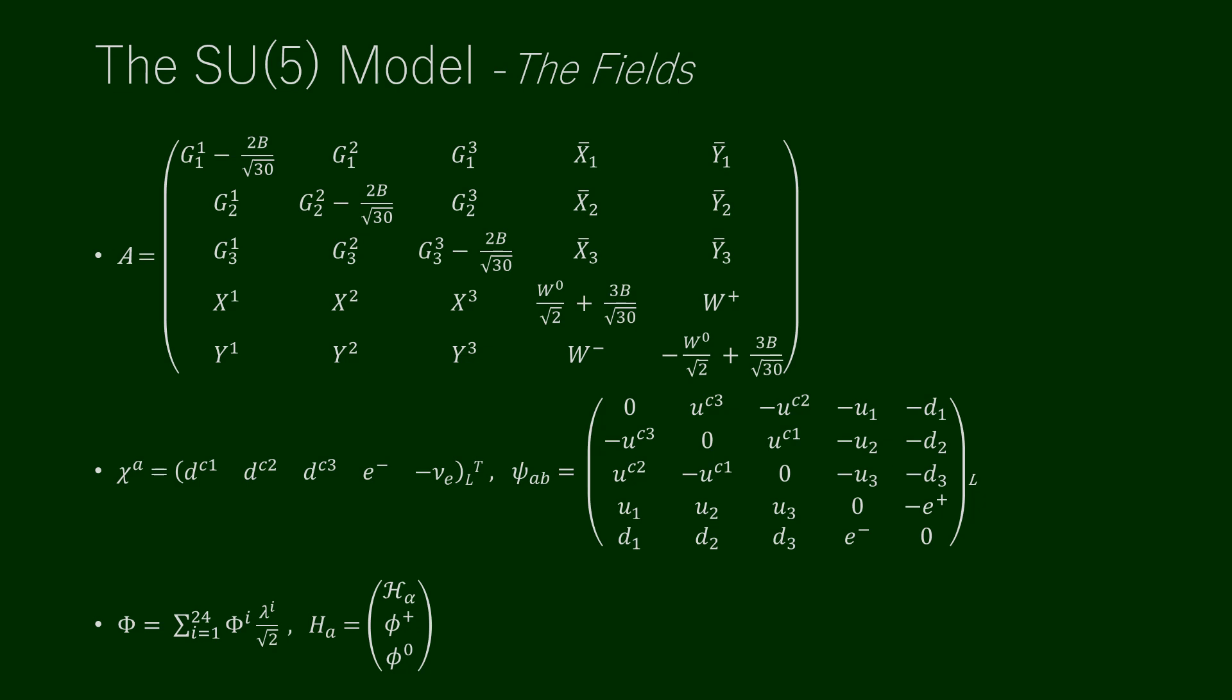Each fermion family of left chiral fields is assigned to a reducible 5 plus 10 representation, where the 5 chi is anti-fundamental and the 10 psi is the anti-symmetric product of two fives. The field content can be written explicitly, where the family indices and weak eigenstate superscript are suppressed. We also introduce a real adjoint Higgs multiplet phi, and a fundamental complex 5-plet H that contains the standard model Higgs doublet. The phi fields have the same quantum numbers as the gauge fields and are introduced to break SU(5) down to SU(3) cross SU(2) cross U(1).